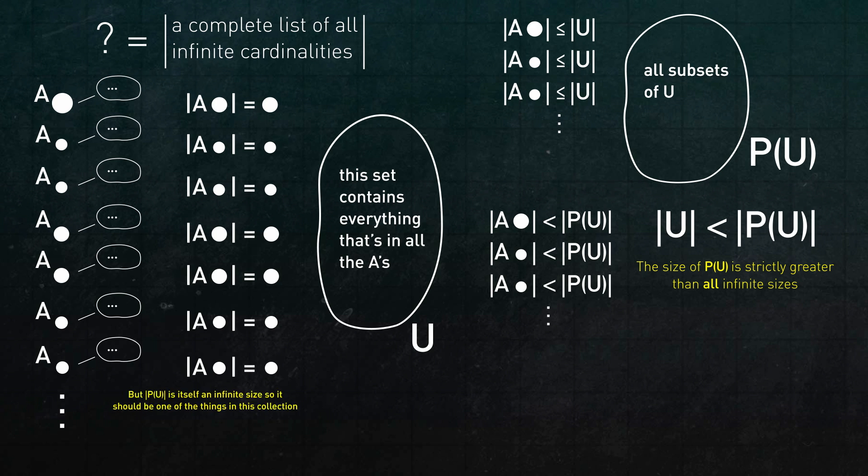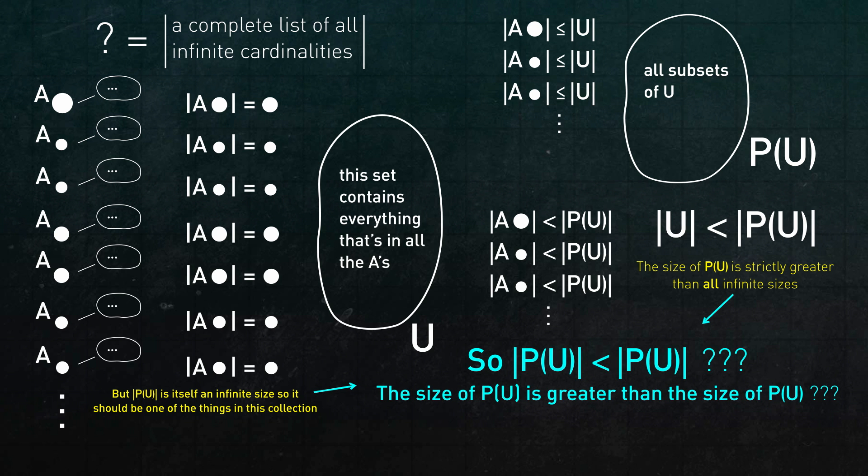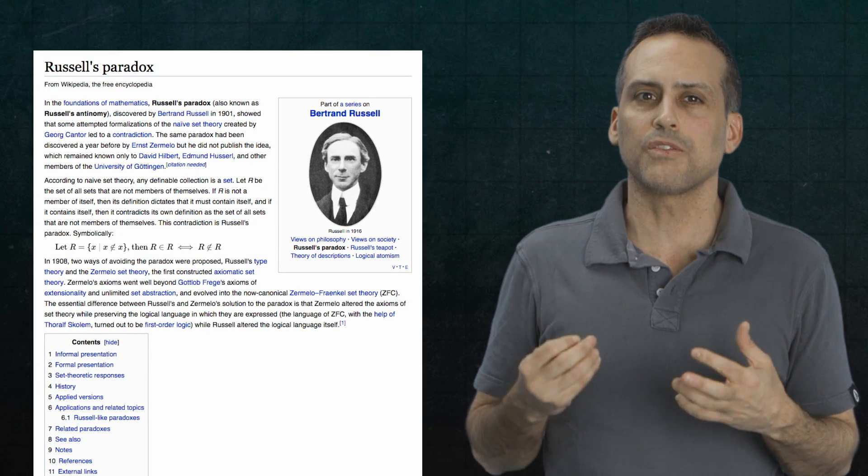But wait a minute. The sizes of all the A's that we union together was supposed to be the totality of all infinite sizes. And that means that the size of the power set of U, which is an infinite set, so that's some infinite size, that was supposed to be one of the things in that totality. So we have a problem. The size of the totality of all infinite sizes is somehow greater than itself? That sounds highly problematic. Reminiscent of something similar to Russell's paradox, but with a little bit of a different flavor.